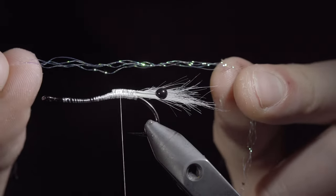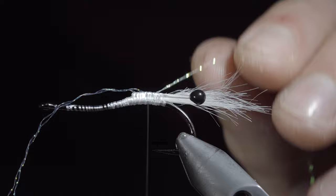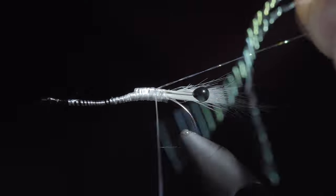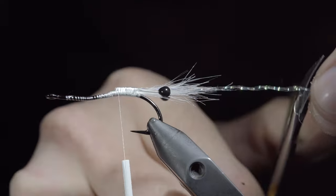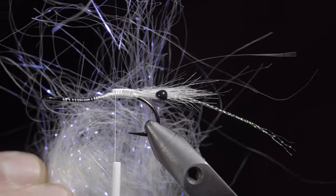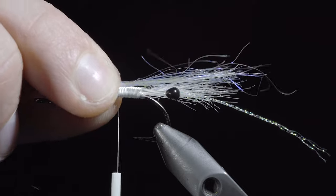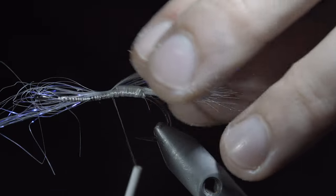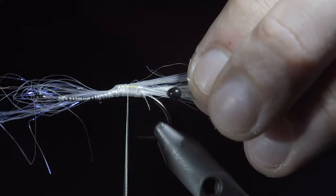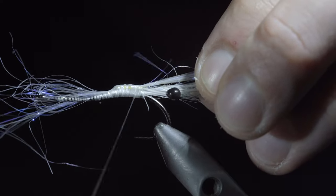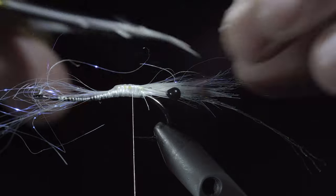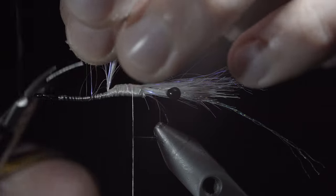We will then select about four strands of pearl or white flashaboo. Secure it to either side of our fly and snip the excess free, leaving it about as long as our hook shank. We will then grab some pearl angel hair and secure this just above our craft fur. This will add a little bit of flash and texture to our pattern. You can use your scissors to trim it down and once happy, snip the excess free.